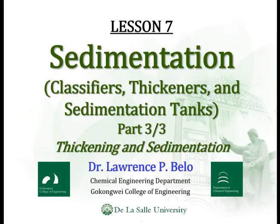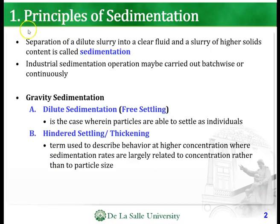For this video, the third part out of three, we'll be discussing thickening and sedimentation. The separation of a dilute slurry into a clear fluid and a slurry of higher solids content is called sedimentation. Industrial sedimentation operations may be carried out batchwise or continuously, so for gravity sedimentation there are two types.